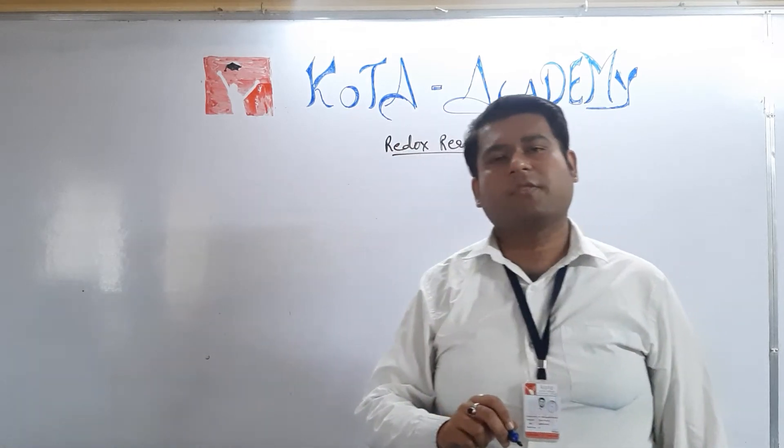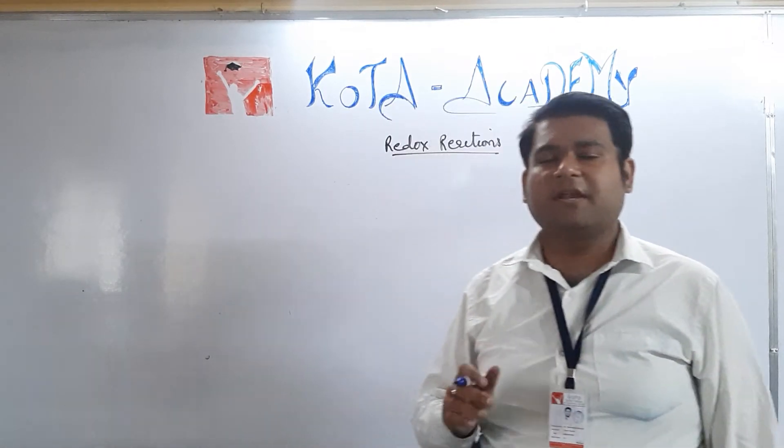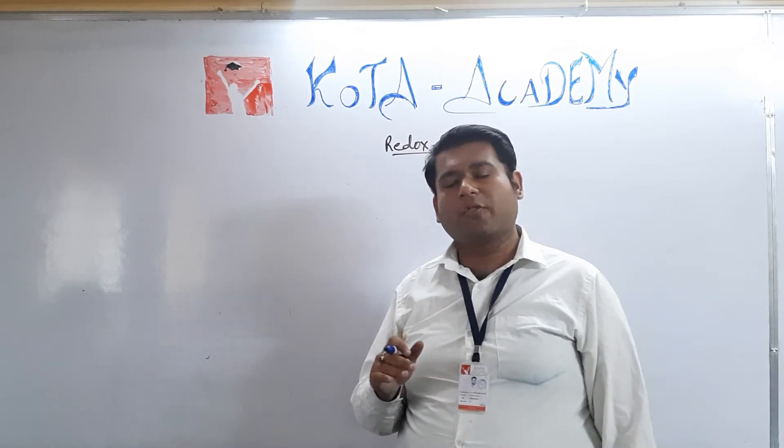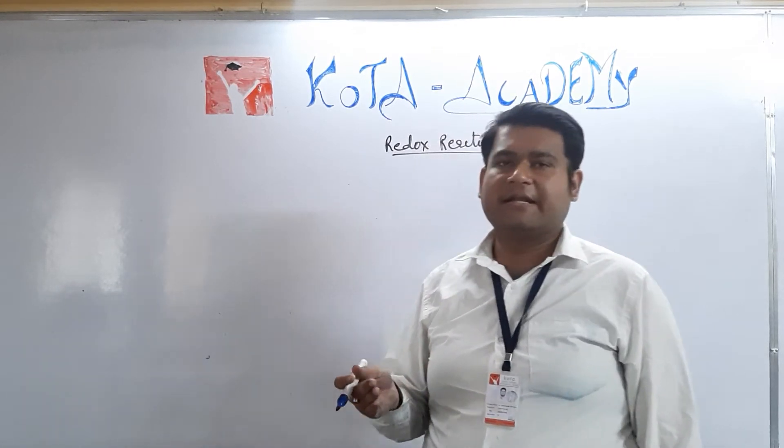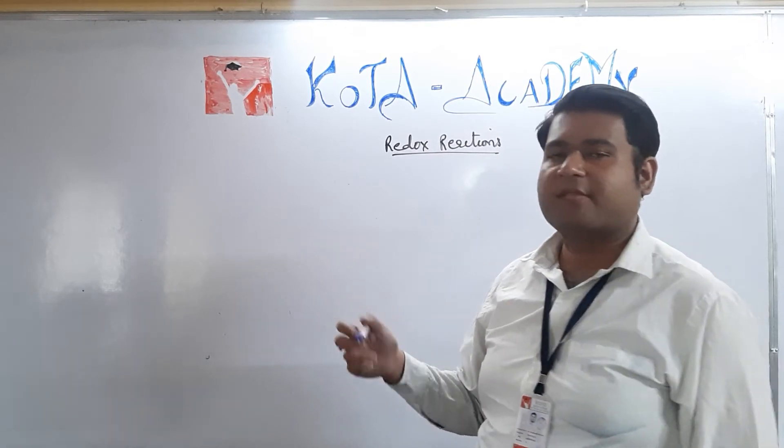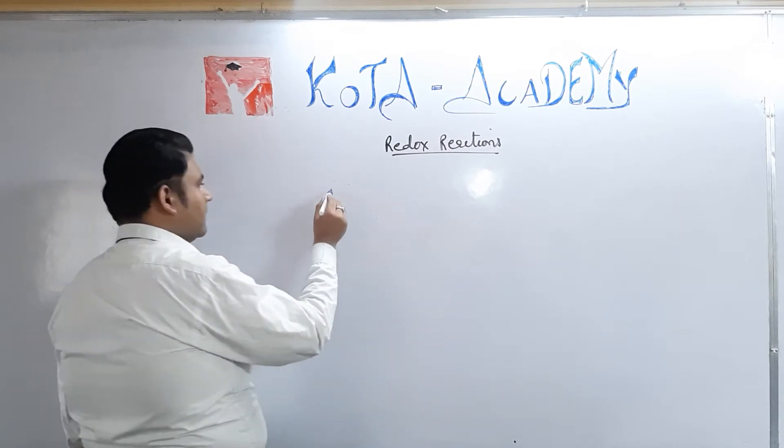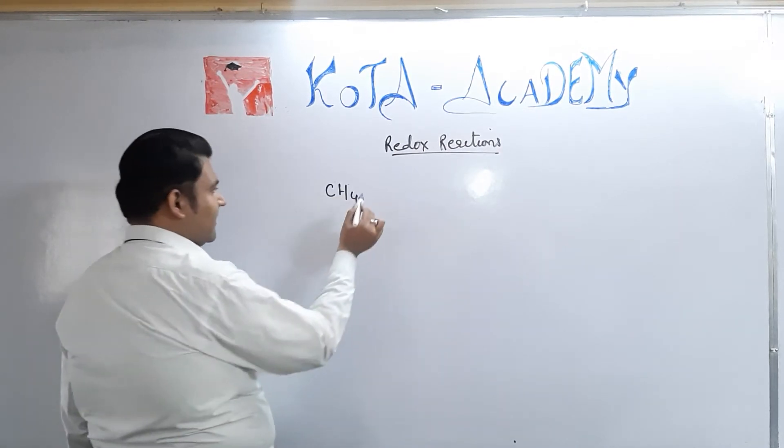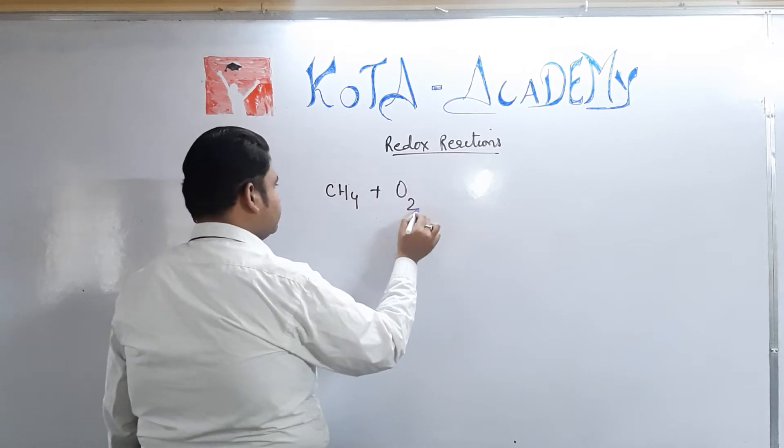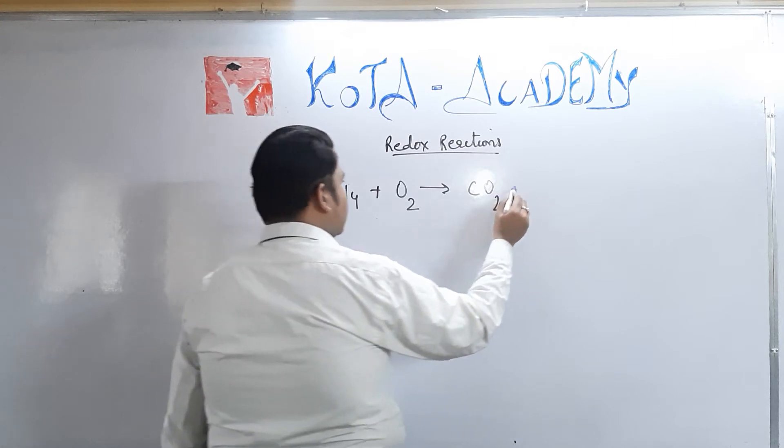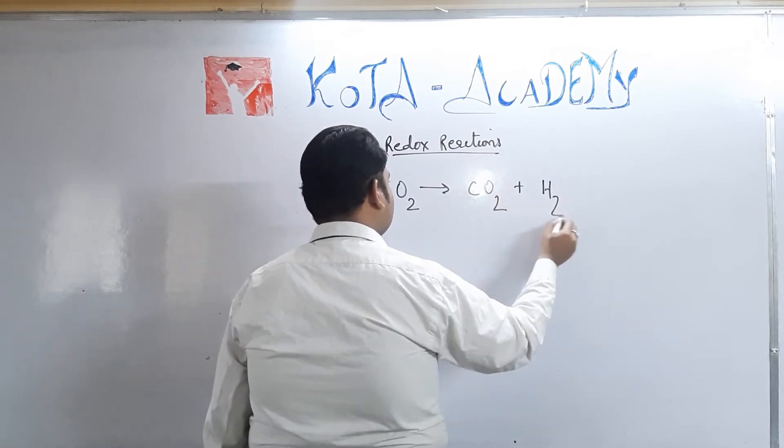So in case of redox reaction, generally we are able to observe that both oxidation and reduction take place at the same time. So the best example which we can take is the burning of natural gas. Methane reacts with oxygen to form carbon dioxide and water.